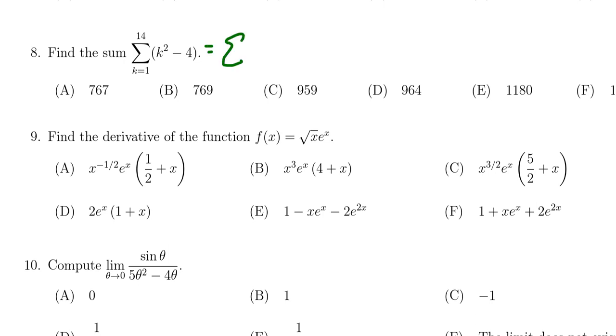So if I was approaching this one, I would break it up into two pieces. Let's take the sum of the k squares minus the sum of the fours, again as we're ranging from 1 to 14.